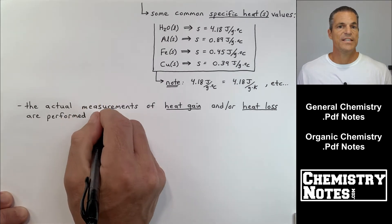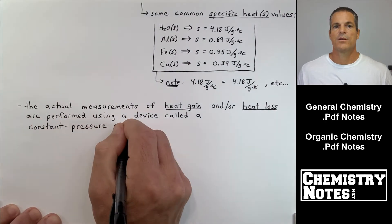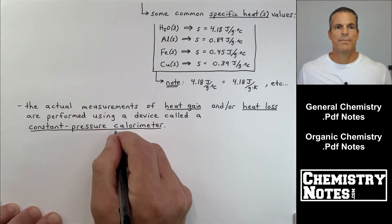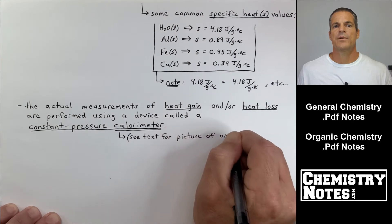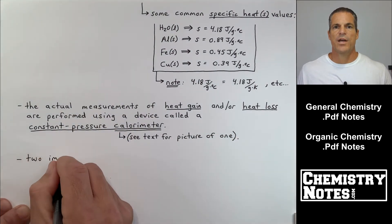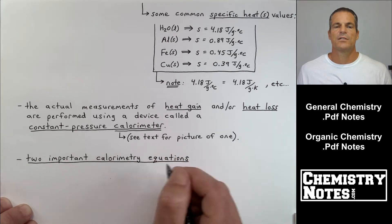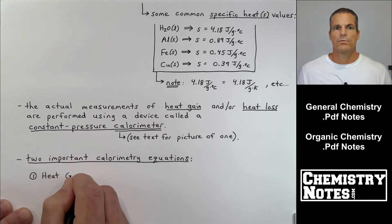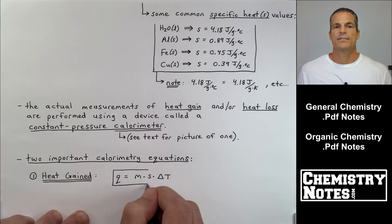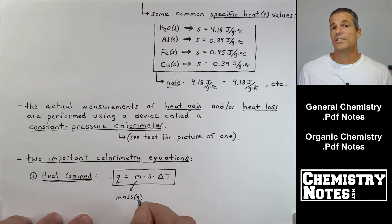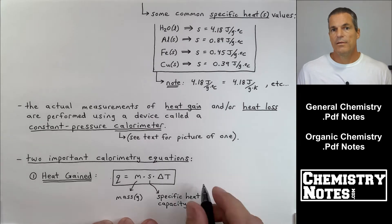The actual measurements of heat gain or heat loss are performed using a device called a constant pressure calorimeter, or just a calorimeter, in a regular lab environment at roughly one atmosphere or 760 Torr. In general chemistry labs, this is typically two nested coffee cups with a lid, and we assume no heat is escaping to the surroundings. Two important calorimeter equations: heat gained — q equals m times S times delta T, or q = msΔT. If you use C for specific heat capacity, you may know this as q = mcΔT or 'q equals mcat.'